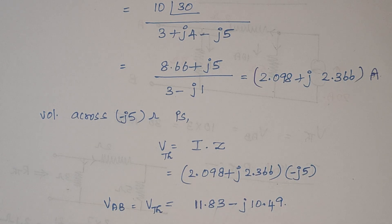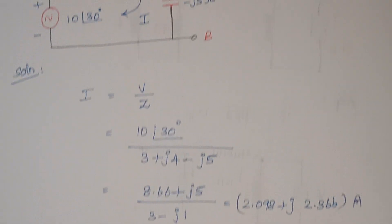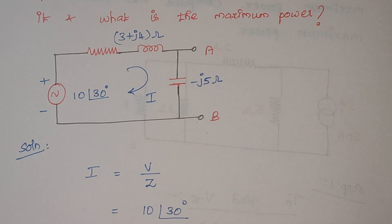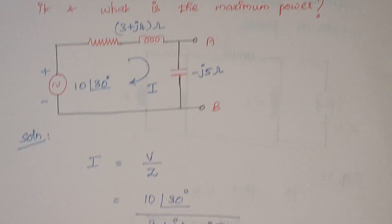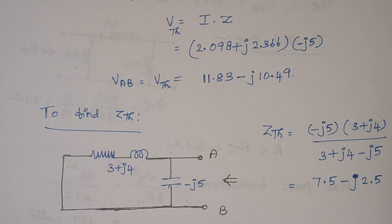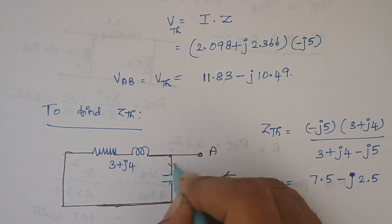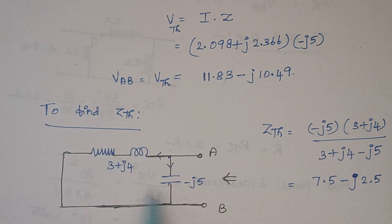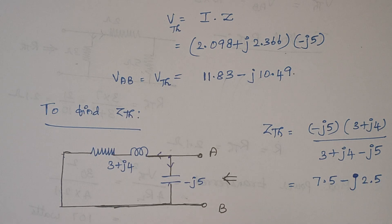The next thing is we need to find Z_Thevenin. Since here we are having inductance and capacitors, we are representing this as Thevenin's impedance, not Thevenin's resistance. To find Thevenin's impedance, we have to remove the load resistance and source voltage. Here the load resistance is not given, so no issues. We have a voltage source, so we have to remove this. When you remove this, at this junction the current gets divided, so these two are said to be parallelly connected. Using Z1 into Z2 divided by Z1 plus Z2, that gives the answer as 7.5 minus J2.5.